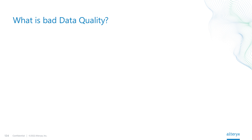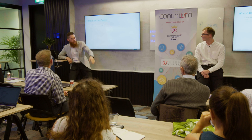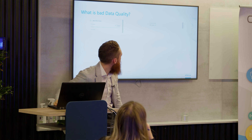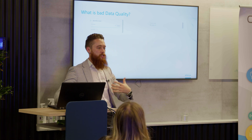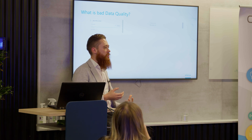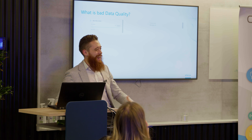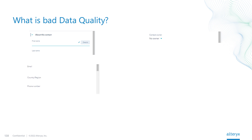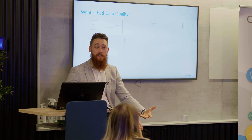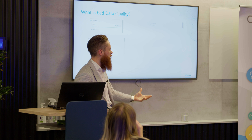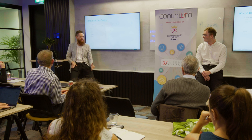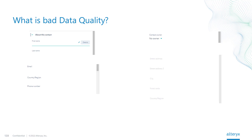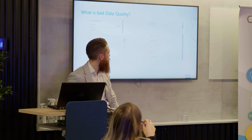What does bad data quality look like? Here are some examples. We've got contacts with no first or last name — I can't send a mail out that just says 'Hi,' with nothing after it; that doesn't reflect well on the company. Contact owner is missing — so who's the representative for that client, and who do we contact if action is needed? We don't know. No email, no country, no region. That matters when inviting local clients to in-person events in Jersey — we don't want to invite international clients by mistake. Address information is also critical for generating quotes and invoices from the CRM.